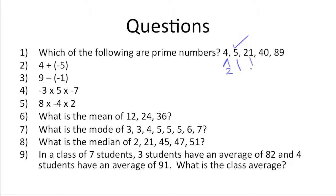Twenty-one can be divided by three or seven, so that can't work. Forty can be divided by two, five, eight, twenty, so that can't work. Eighty-nine, if you work it out, can't be divided by any other numbers except by eighty-nine and itself, so that works. So the two prime numbers are five and eighty-nine.